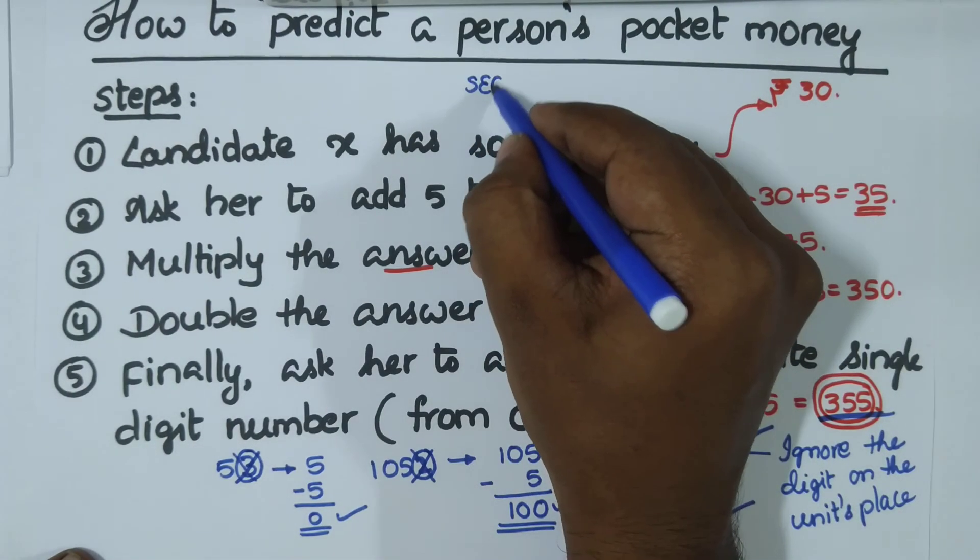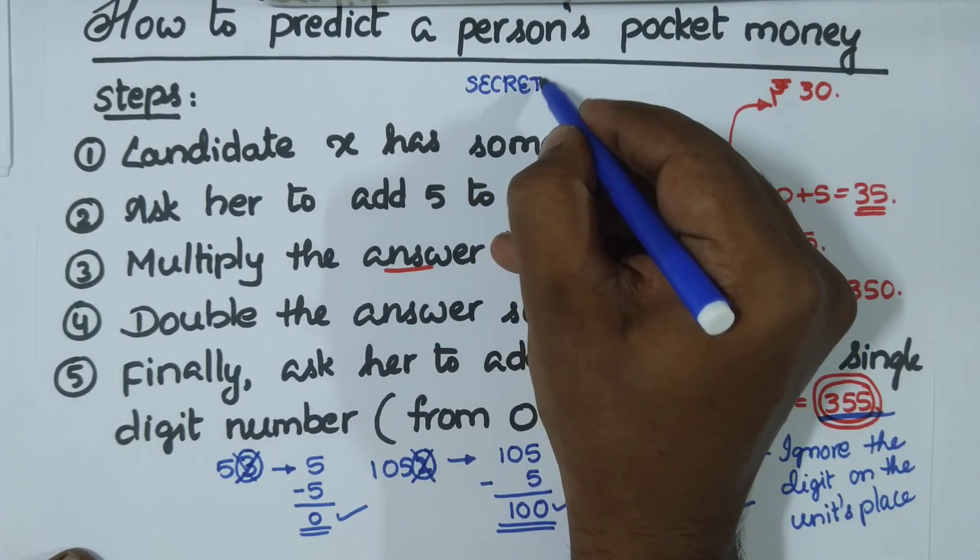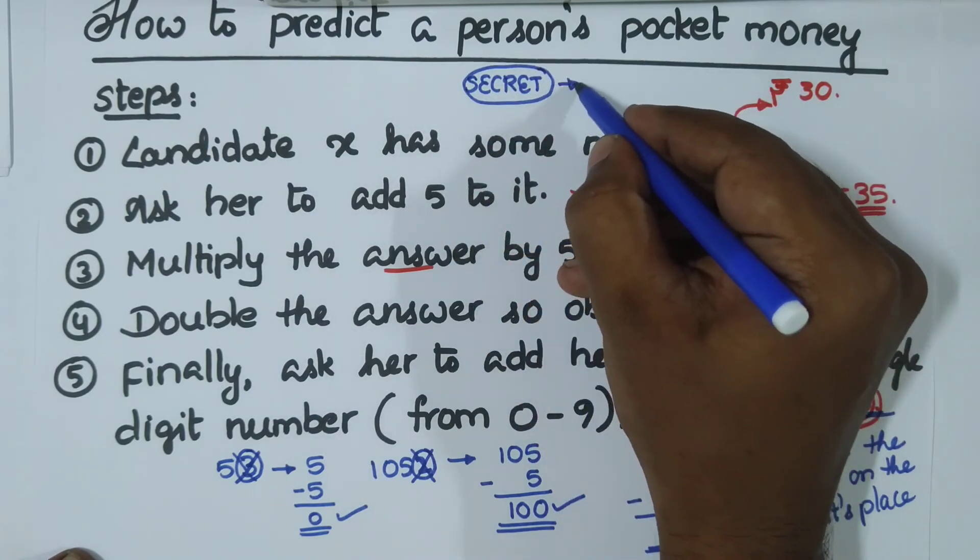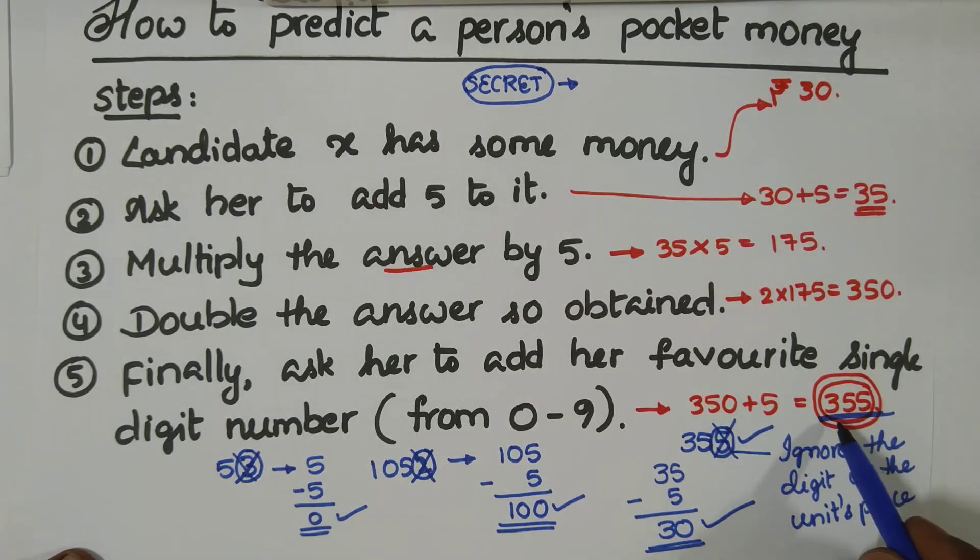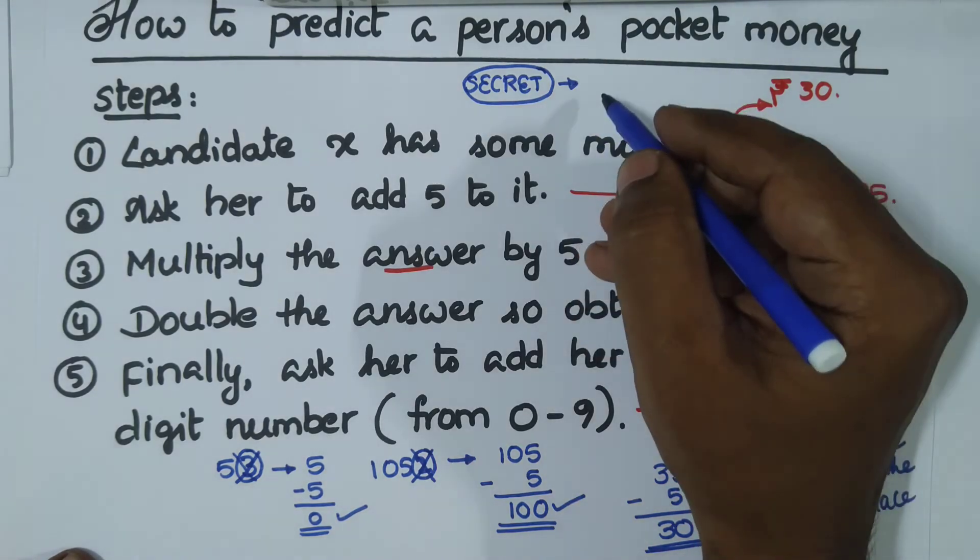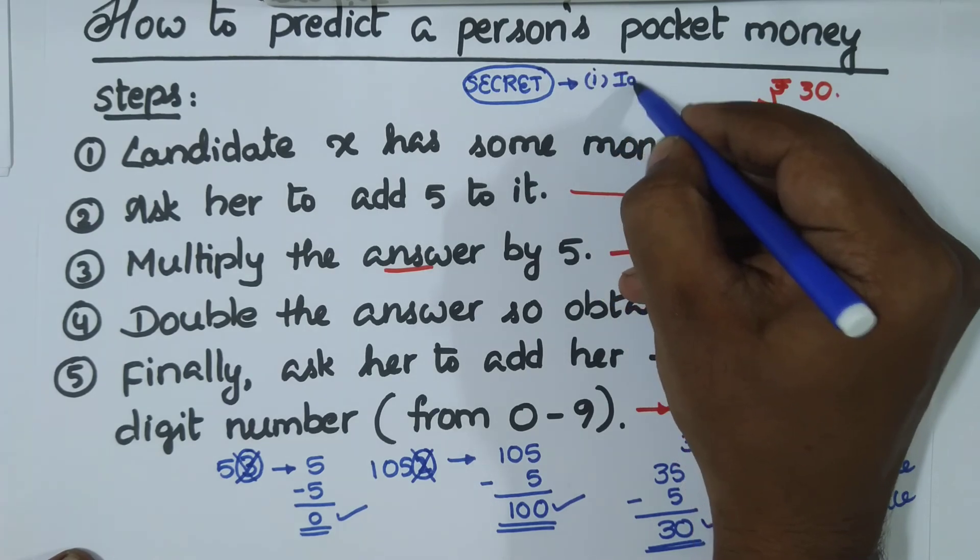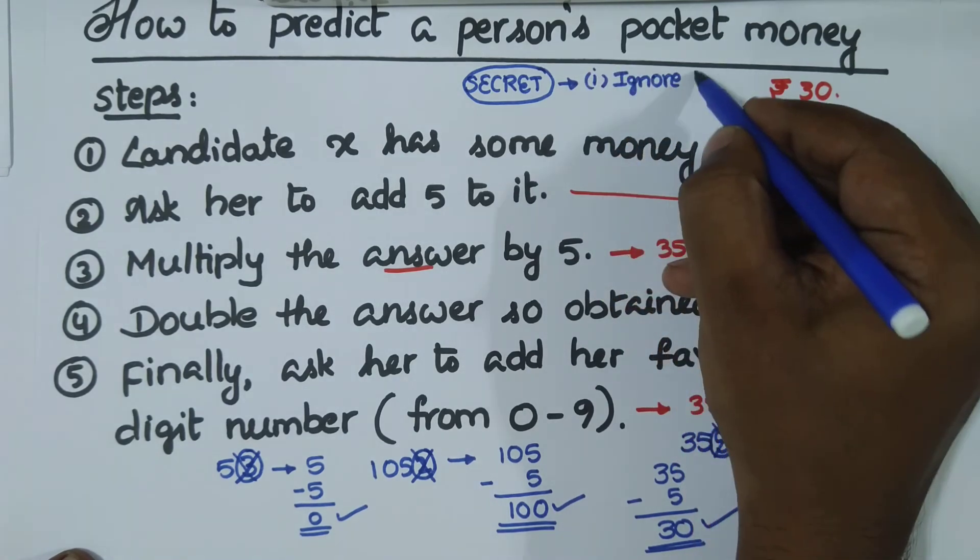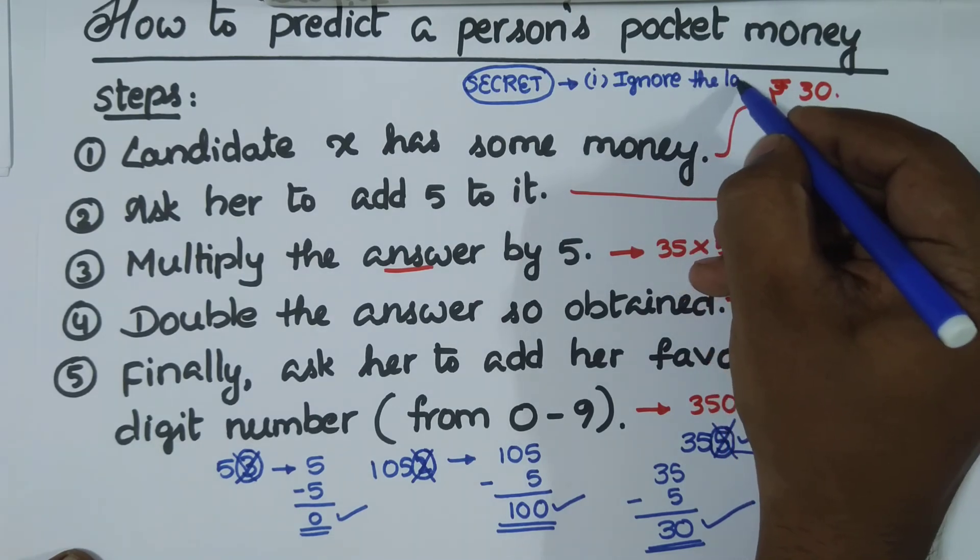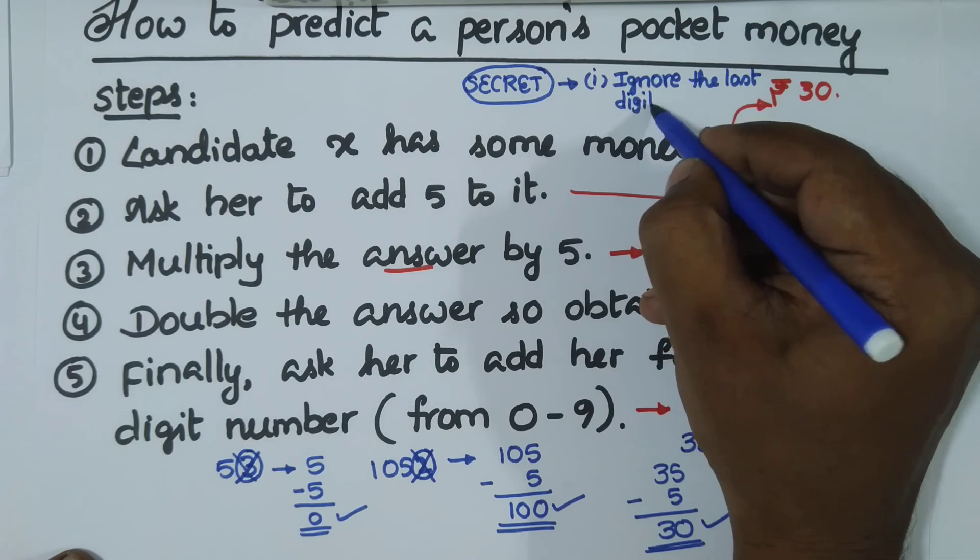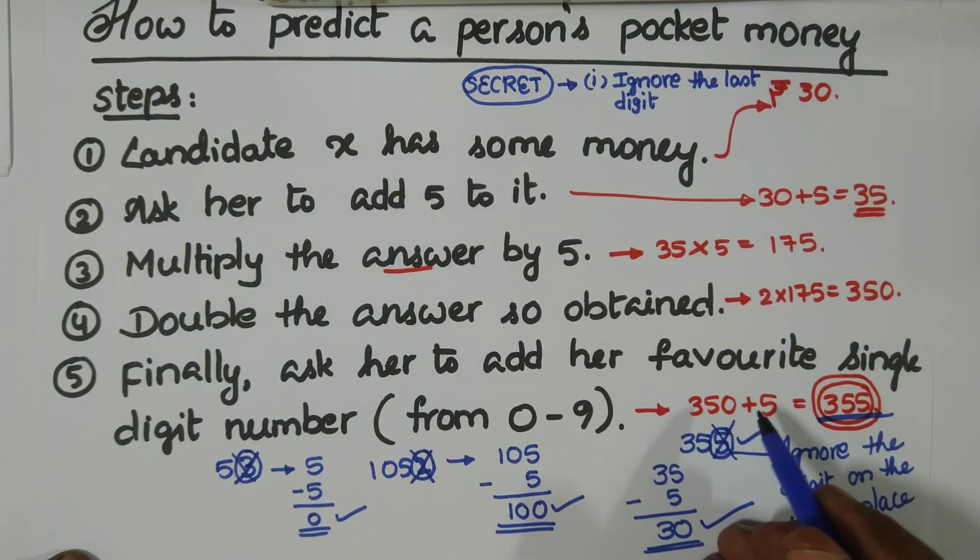So we have revealed the secret. What is the secret here? From the answer obtained, you have to ignore the last digit on the unit's place. Step one is this: ignore the last digit.